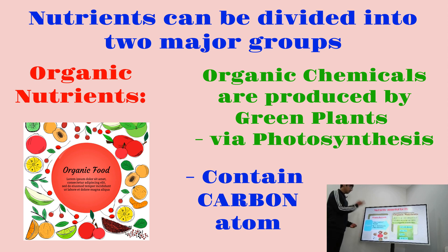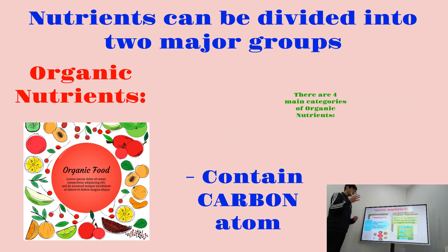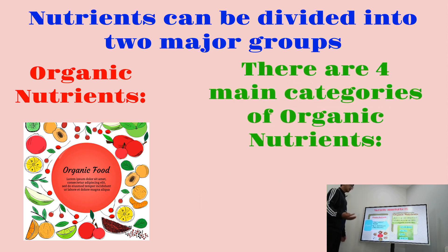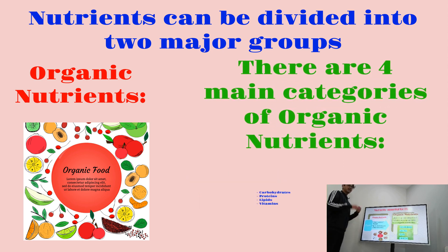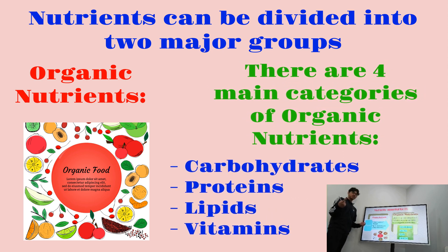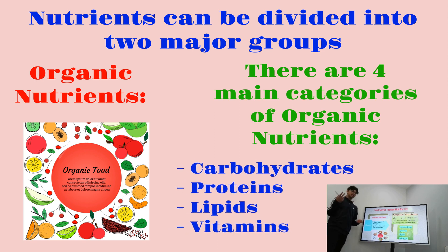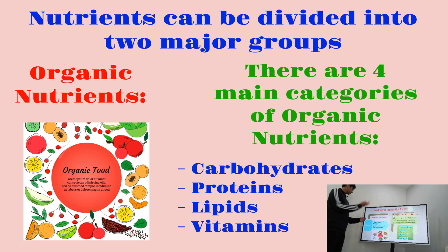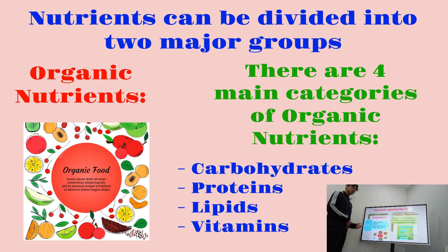Within organic substances, there are four major categories of carbon-containing nutrients: carbohydrates, proteins, lipids, and vitamins. Those are the four main categories of organic nutrients.